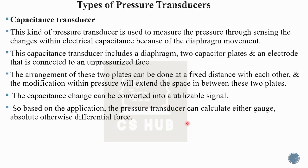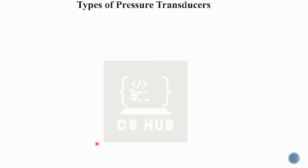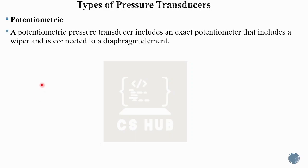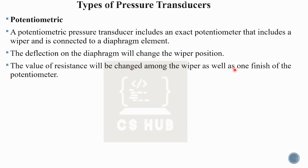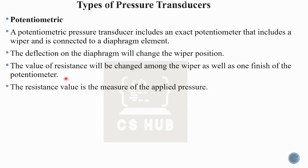Based on the application, a pressure transducer can measure either gauge, absolute, or differential pressure. The potentiometric transducer uses a potentiometer. The diaphragm deflection changes the wiper position. The wiper is connected to the diaphragm element. The deflection on the diaphragm changes the wiper position, and the value of resistance will change between the wiper and one end of the potentiometer. The resistance value is the measure of the applied pressure. When pressure is applied, the diaphragm moves, the movement is connected to the wiper, and the resistance changes.